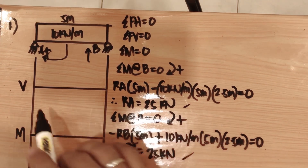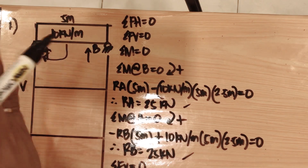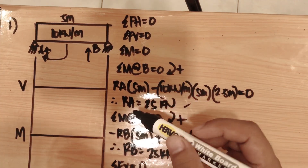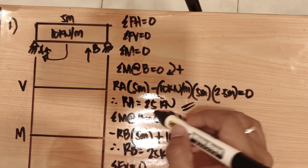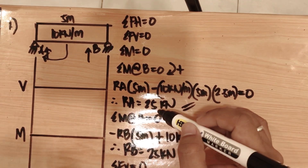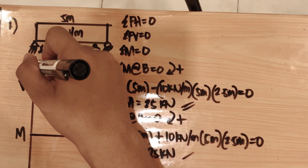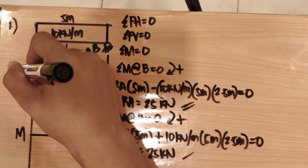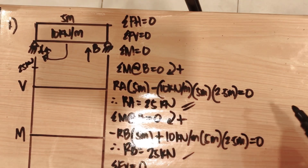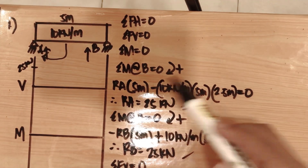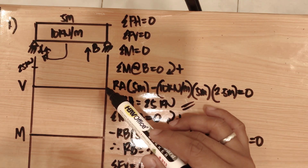For the shear diagram, we start from left to right. At point A, we have RA equal to 25 kilonewtons upward, so the shear goes from zero up to 25 kilonewtons. This is the shear at point A. At point B, we also have 25 kilonewtons upward.